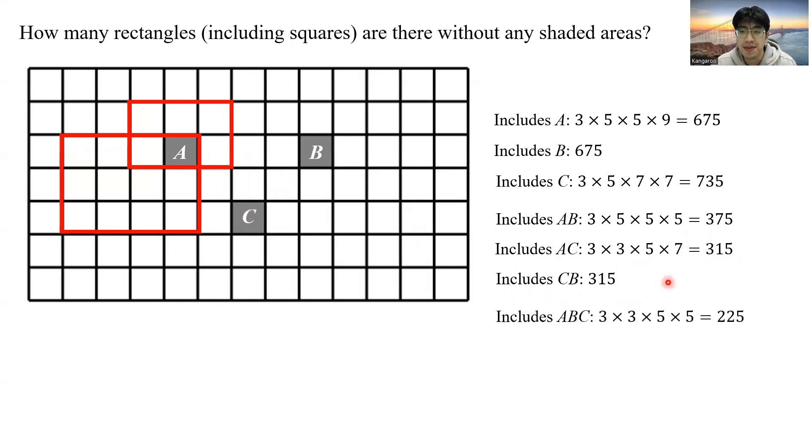And for those, there are 225 such rectangles. So in total, there are 1305 rectangles containing shaded areas.